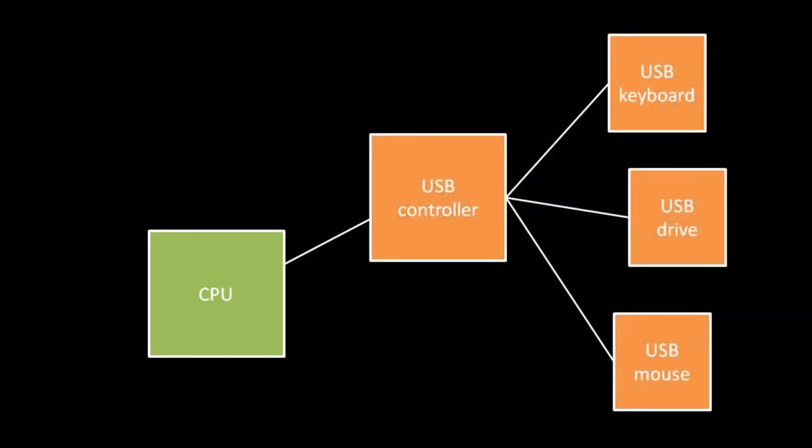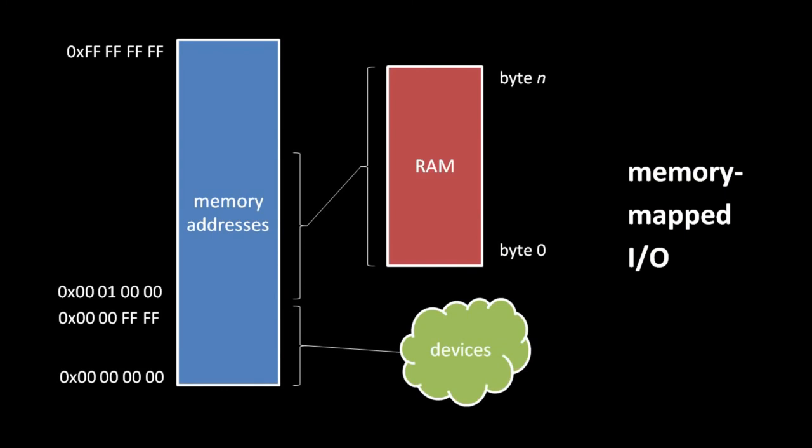In many cases, input-output devices communicate indirectly with the CPU through a controller device. USB devices, for example, talk directly to a chip called the USB controller on your mainboard, which in turn talks directly to the CPU. So what are the CPU instructions for reading and writing device registers? In CPUs which use what's called memory-mapped I/O, some memory addresses specify device registers instead of bytes of system memory.